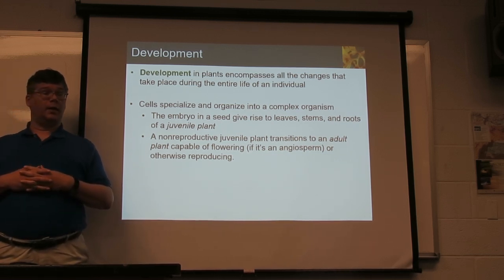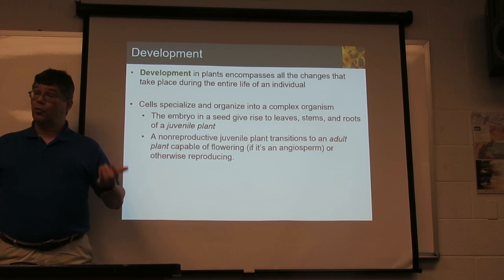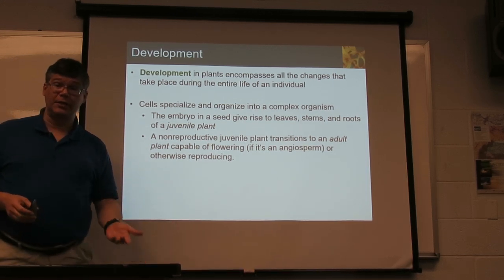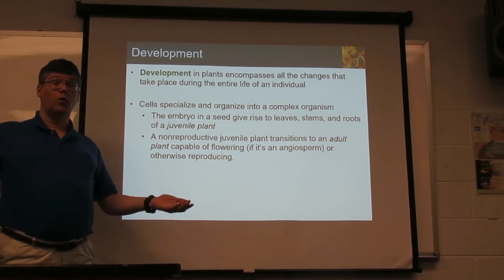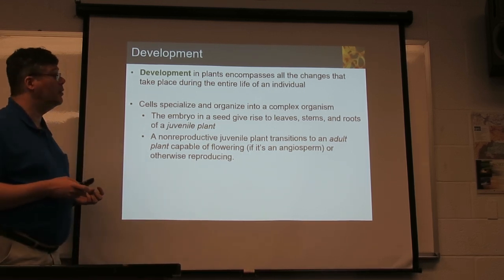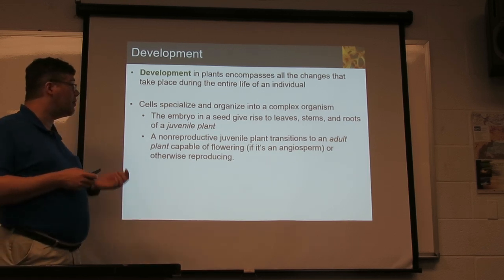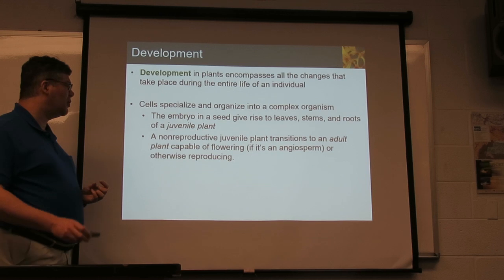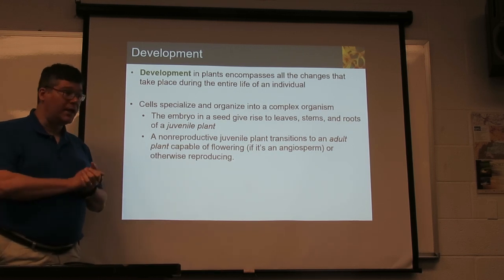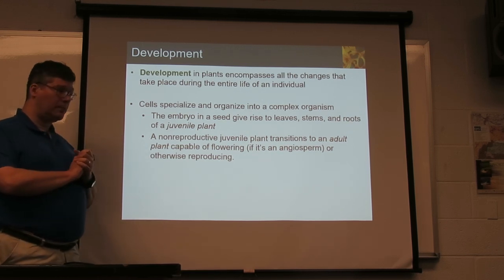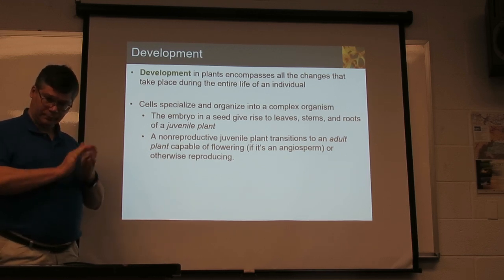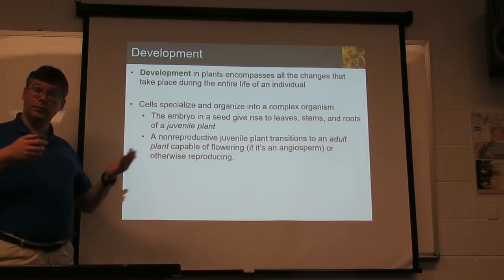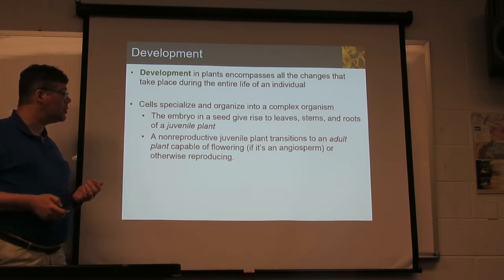Plants, like any multicellular organism, go through a process of development — the changes that take place from that first fertilized cell all the way through the body at the time of death. With a seed plant, that seed grows into a juvenile plant, and once the juvenile plant is old enough, it will then develop the reproductive structures as an adult.